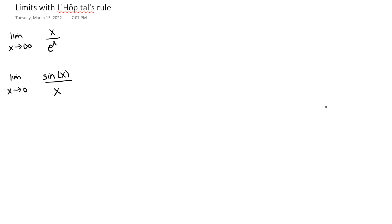We know that x going to infinity means that the numerator is going to grow without bound, and also our denominator is going to grow without bound. So we're wondering, is this equal to just infinity over infinity? Actually, we can crunch this number and it will be something finite. We will see how to do that in a minute with L'Hôpital's Rule.